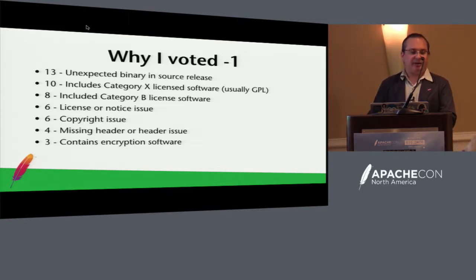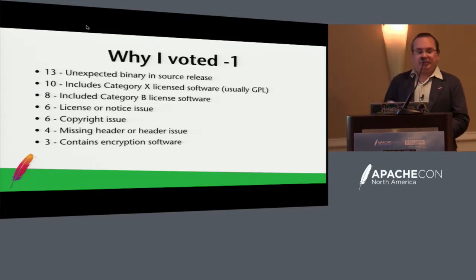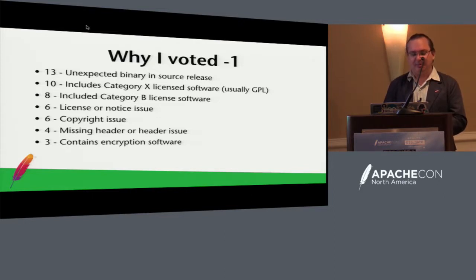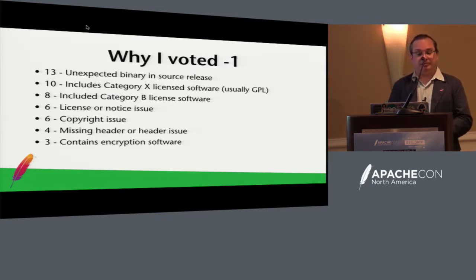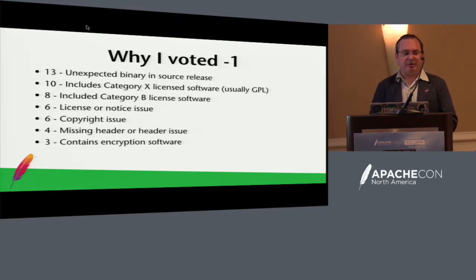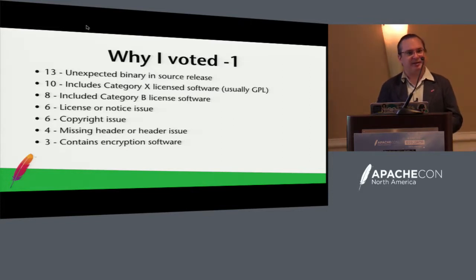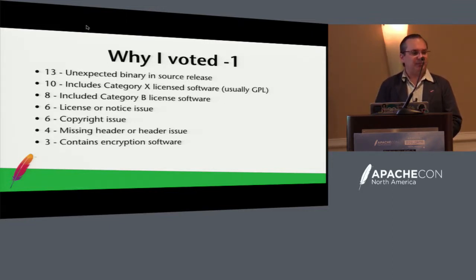Eight releases included Category B license software in the source release, which is not allowed. The rest had licensing and notice issues — generally not so severe, but in some cases just not good enough. Copyright issues have come up a few times: included code that Apache couldn't distribute or didn't own the IP to. Missing headers: if you're missing just a single header your vote will probably pass, but 100 files of missing headers where it's very unclear what is Apache licensed will likely fail. There are also some restrictions on encryption software, thanks to the US government.